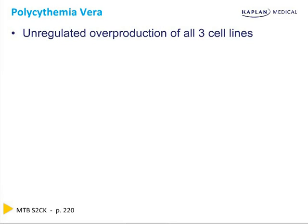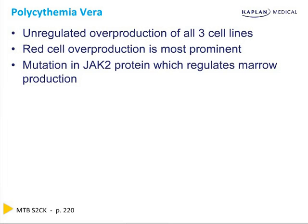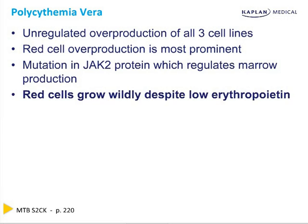The next disorder, polycythemia vera, is exactly the opposite of aplastic anemia — this is an unregulated overgrowth, predominantly of red cells, but it can be of all three cell lines. It results in a JAK2 — Janus kinase 2 — mutation. You've got to exclude hypoxia, and a JAK2 mutation is the standard test now for polycythemia vera and essential thrombocytemia, because JAK2 mutation damages the ability to regulate marrow production. That's why red cells grow wildly despite no erythropoietin. It's polycythemia vera if the red cells are growing without hypoxia or erythropoietin.